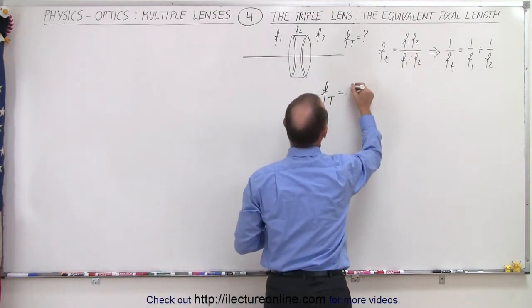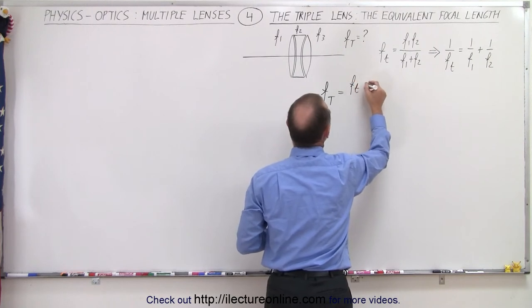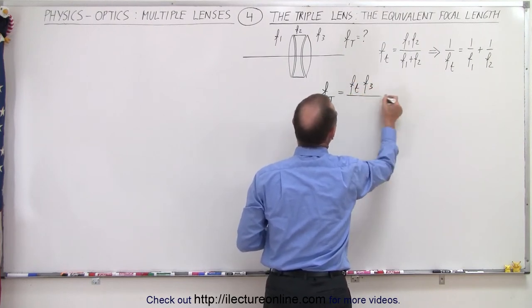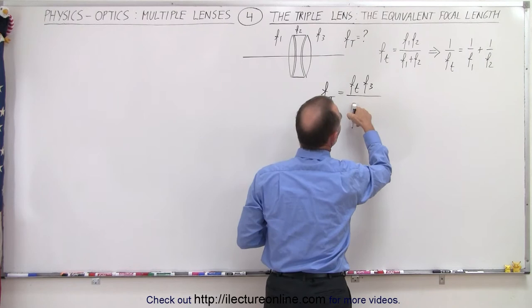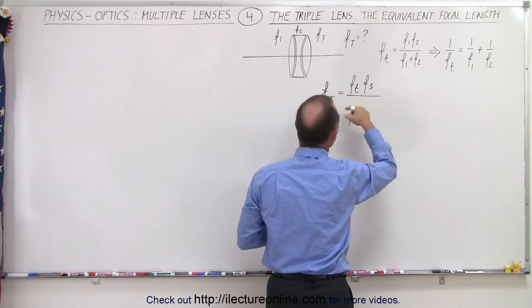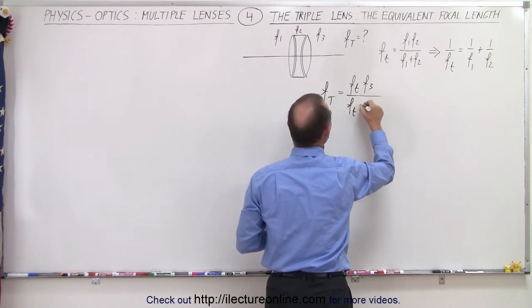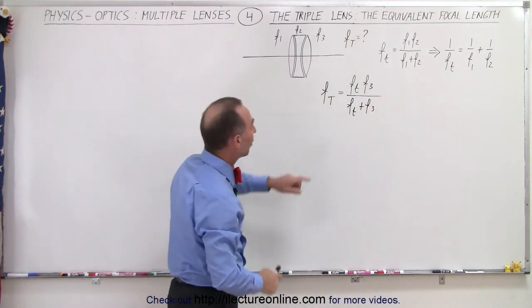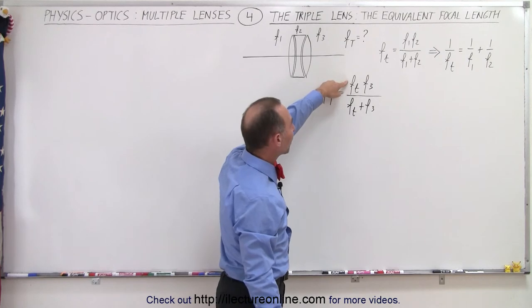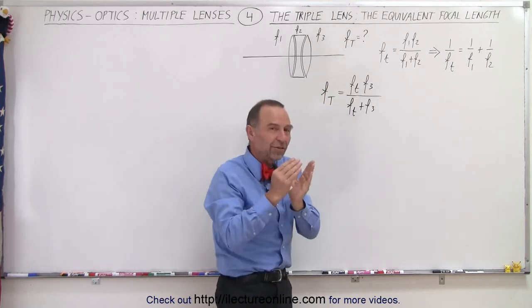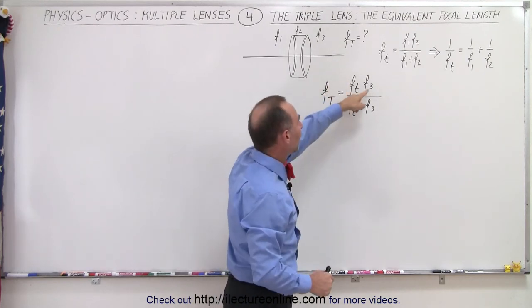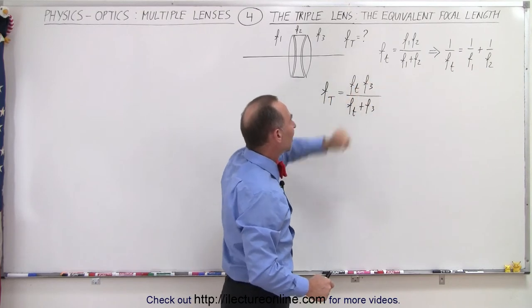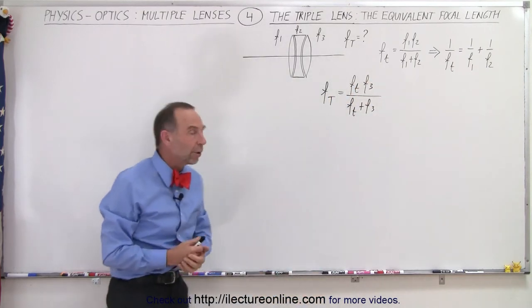Which means that this is now going to be equal to f with a small t times f3 divided by the sum of ft plus f3. So here we're going to use the same principle. In this case, the total focal length of the first two lenses is going to be considered to be a single focal length, and then we're going to have a third lens attached to that. So we're going to rewrite the equation like that.